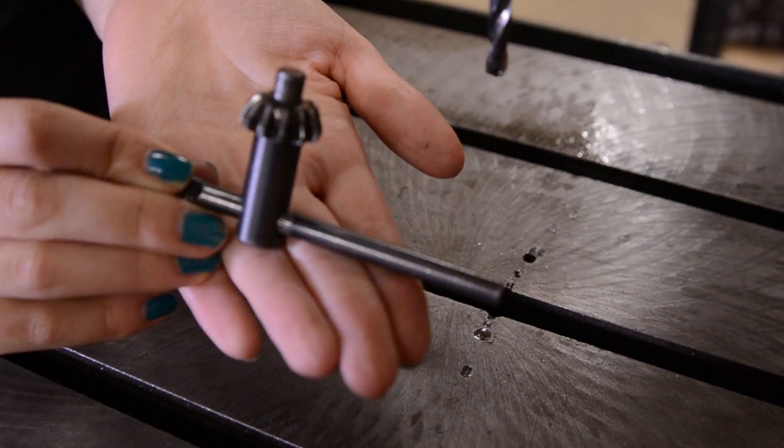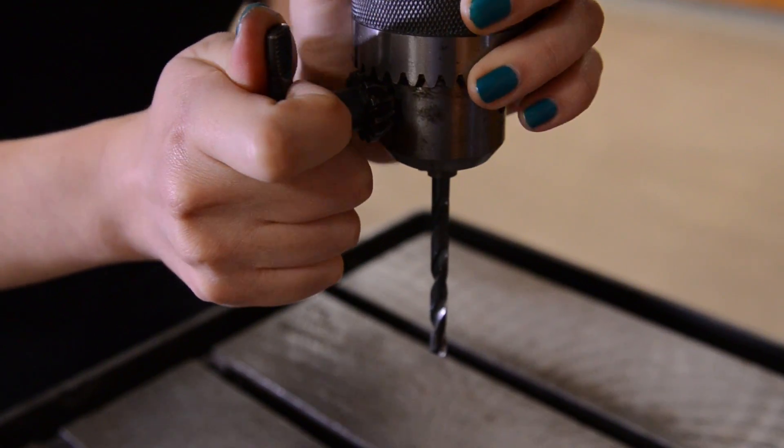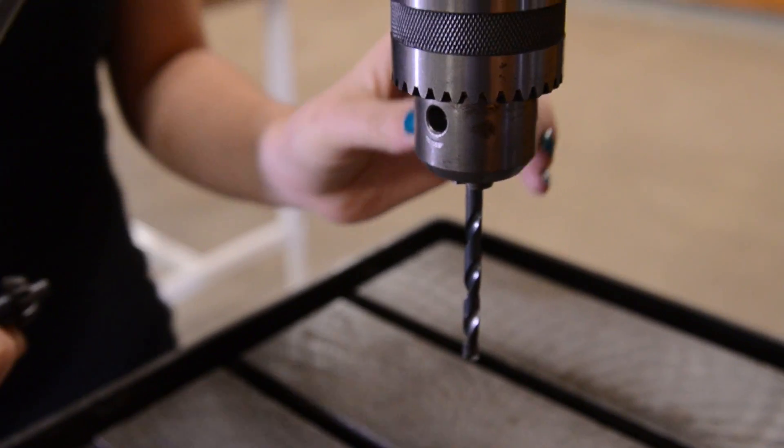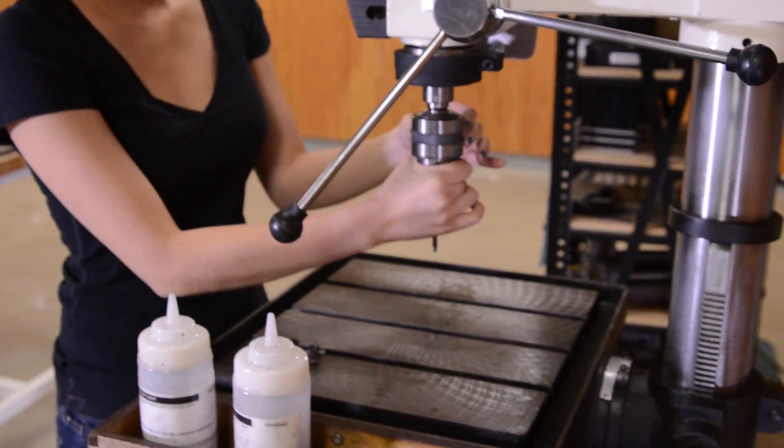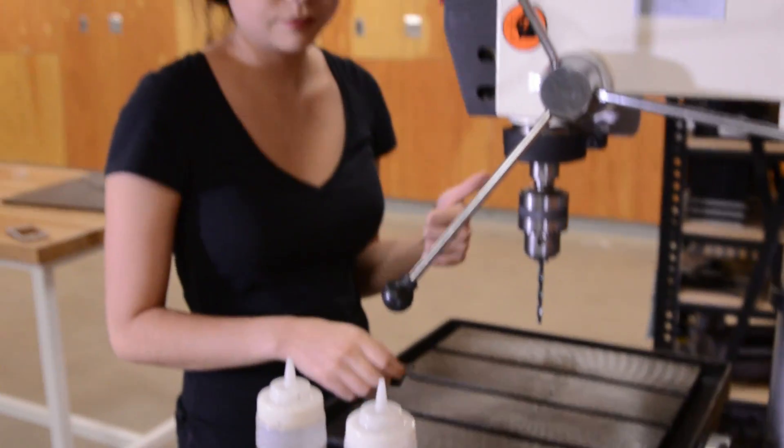Once this is nicely in here, you want to grab your key, which is going to look something like this. Grip it in there, and that should be tight enough. If you can't really undo it by hand, then you're all set.